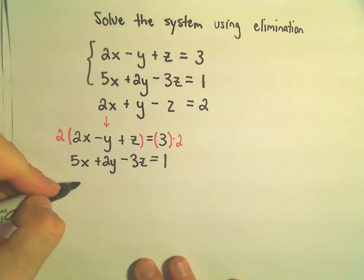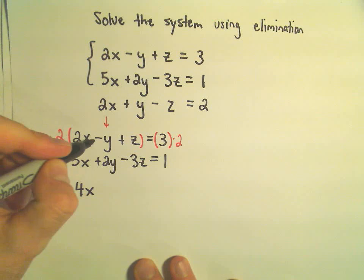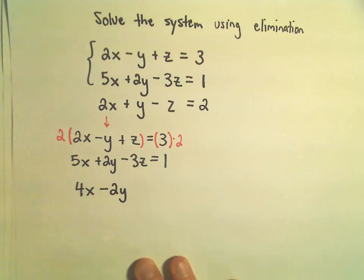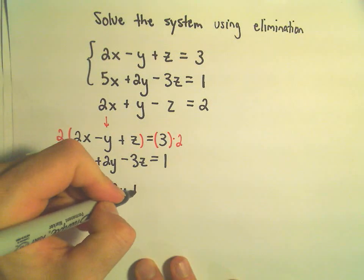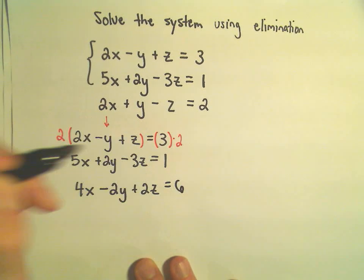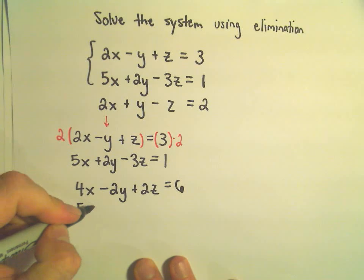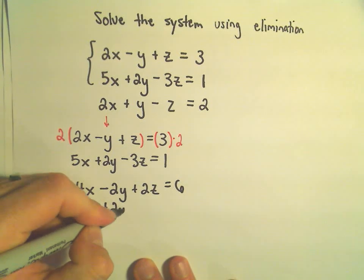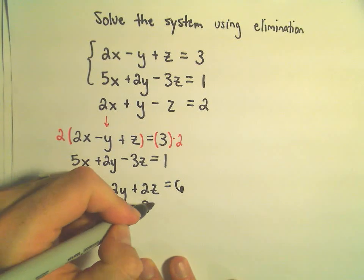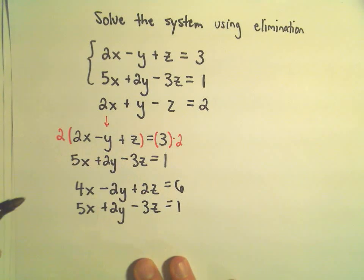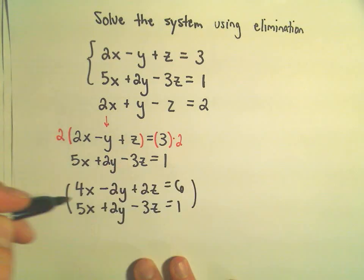2 times negative y will be negative 2y, 2 times positive z will be 2z, and then we'll have 6 on the right side. And then I'm going to take my other equation and just write it down just like it was, 5x plus 2y minus 3z equals 1.